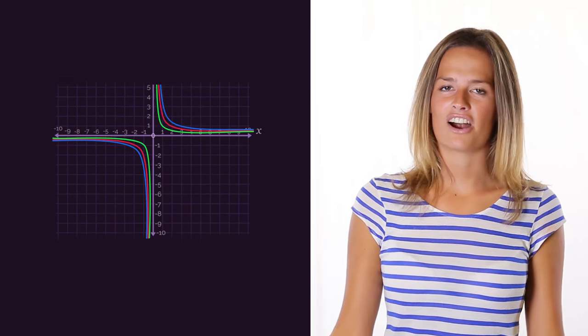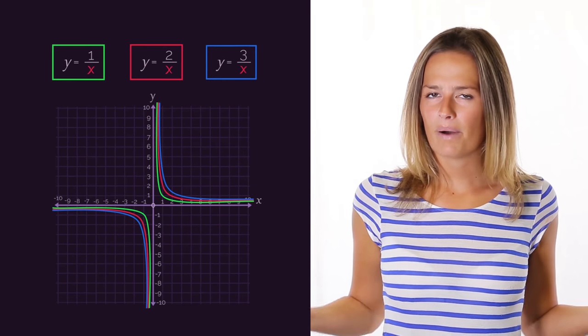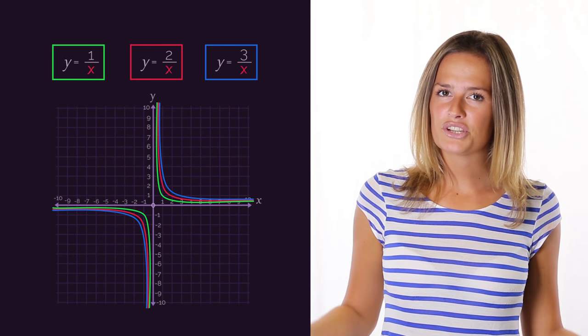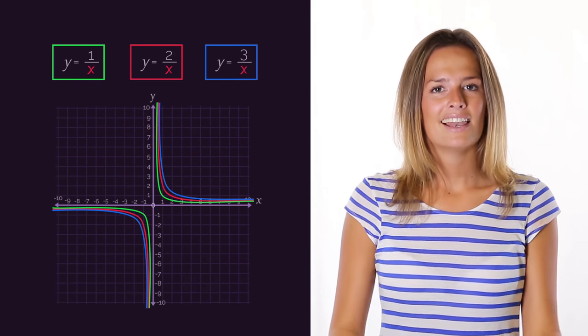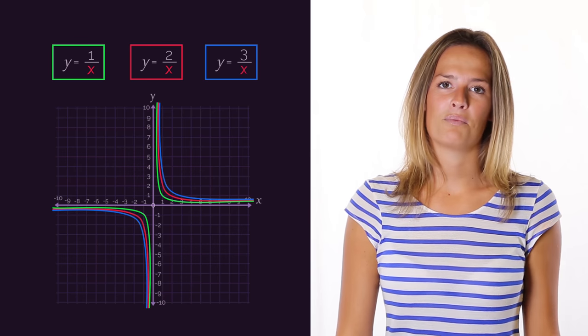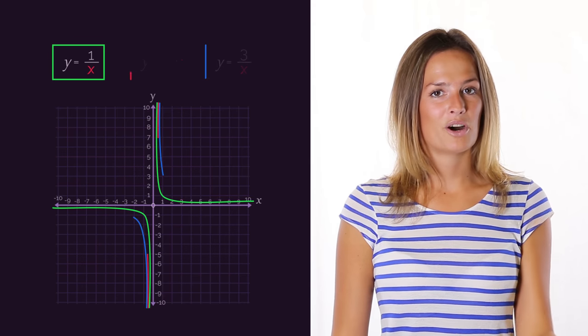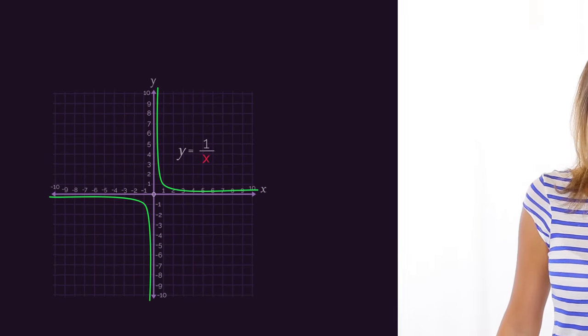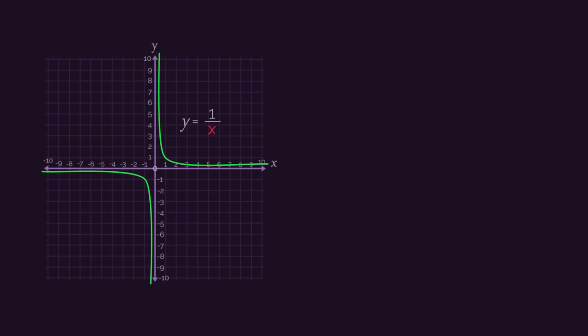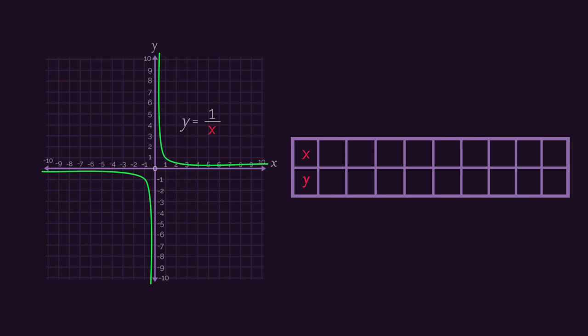Going back to the graphs — why do they split into two separate parts? Let's have a look at y equals 1 over x in more detail. We have our table of values, and if we substitute in these x values into y equals 1 over x, we get these values.